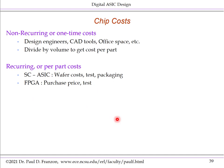There are two types of costs in chip engineering: non-recurring and recurring costs. Non-recurring costs are one-time costs associated with designing the part — engineering time, CAD tools, office space — divided by the volume to get cost per part. Recurring costs are per-part costs. For a standard cell ASIC, recurring costs include mask making, wafer costs, test, and packaging. For an FPGA, it's the purchase price per part and any testing costs.